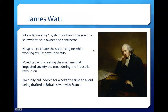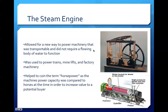Specialists of the Industrial Revolution credit Watt with creating the machine that impacted society the most during the revolution. The steam engine was a magnificent machine for its era and is rightfully credited as the most important machine created during the Industrial Revolution. It functioned by turning water into steam, which under high pressure led into a cylinder and moved a piston to create energy. The steam engine was efficient as it allowed for a new way to power machinery that was transportable and did not require a flowing body of water to function. It was used to power mine lifts, factory machinery, and eventually the locomotive. Another fun fact is that the steam engine is responsible for helping coin the term horsepower, as the machine's power capacity was compared to horses to increase its value to potential buyers.